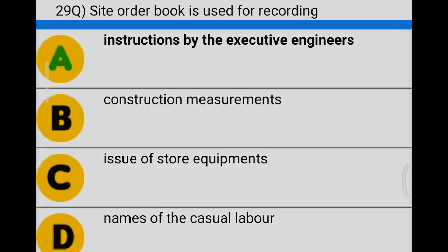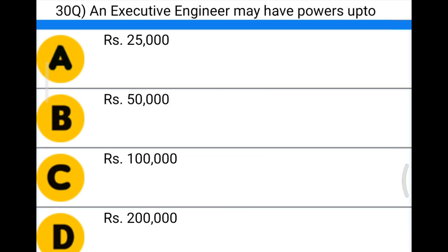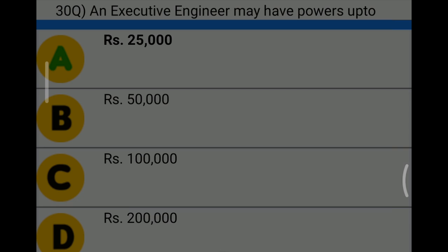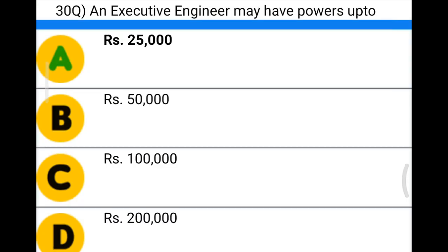Next question: an executive engineer may have financial powers up to — Option A: 25,000, Option B: 50,000, Option C: 1 lakh, Option D: 2 lakhs. The correct answer is Option A, 25,000. We will see you in the next video, thank you.